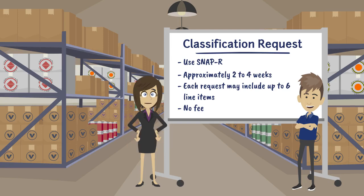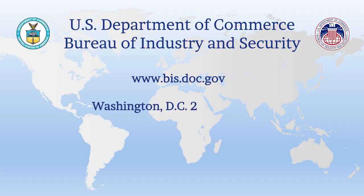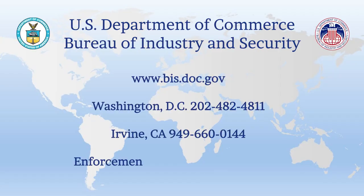Once you know your ECCN, you are ready to determine if you have an export license requirement to export your products. I recommend watching Export Control's Quick Start Guide for those steps. As always, the Bureau of Industry and Security's Office of Exporter Services is here to help. Please feel free to contact us if you have any further questions. Thank you and happy exporting!